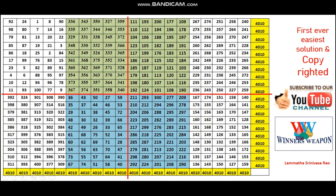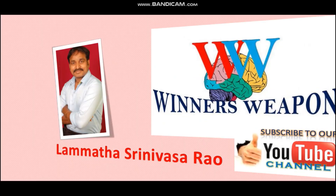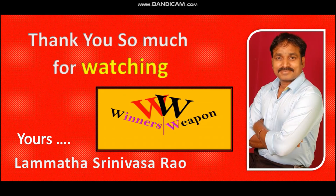We didn't disturb any column, so the magic constant 4010 for columns remains the same. The row sums that were 3010 became 4010, and those that were 5010 also became 4010. The sum of all diagonals also gives 4010. So we need not exchange any further — we have achieved the magic constant 4010 through both diagonals, all rows, and all columns. That's all for today. This is Salamat Srinivasaral signing off — please subscribe to our channel, thank you so much.